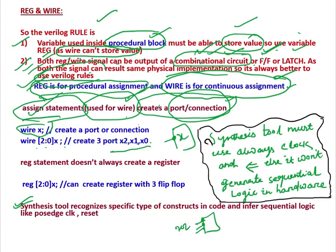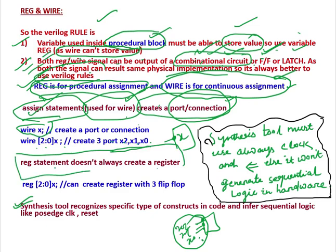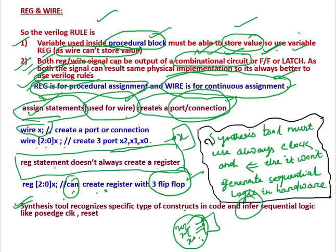X2, X1, and X0 — these are simply wire connections, not registers. Reg statement doesn't always create a register. For example, Reg [2:0] X can create a register with three flip-flops, but not always. The synthesis tool recognizes specific types of constructs and decides whether the hardware generated is combinational or sequential depending on what constructs are written in the Verilog code.